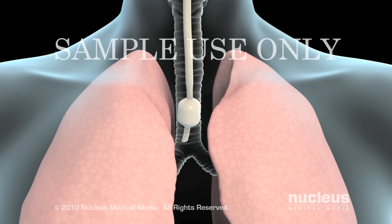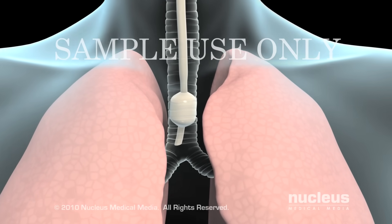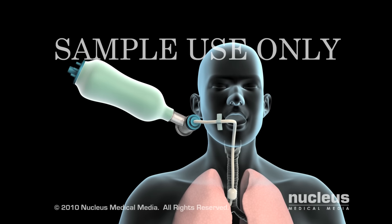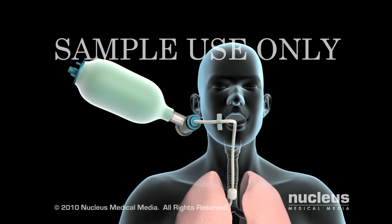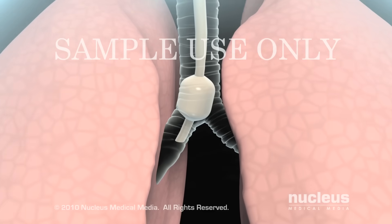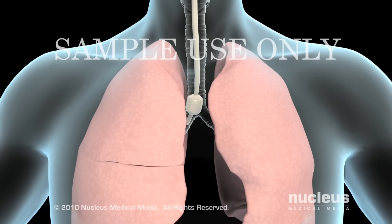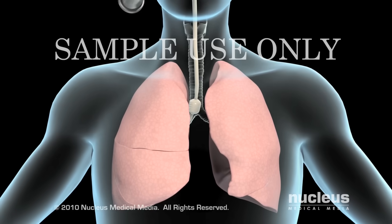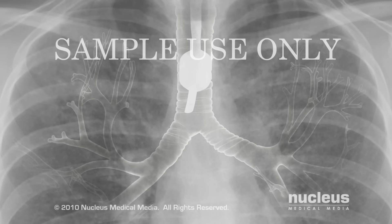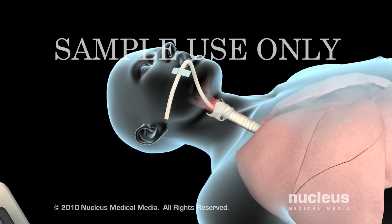Your doctor will check to see that the tube is properly positioned in the lower part of the trachea by inflating your lungs with a special bag and listening for breath sounds on both sides of your chest. If the end of the tube is too low, both lungs will not receive the same amount of air. In some cases, an x-ray is taken immediately after intubation to confirm the tube's placement.